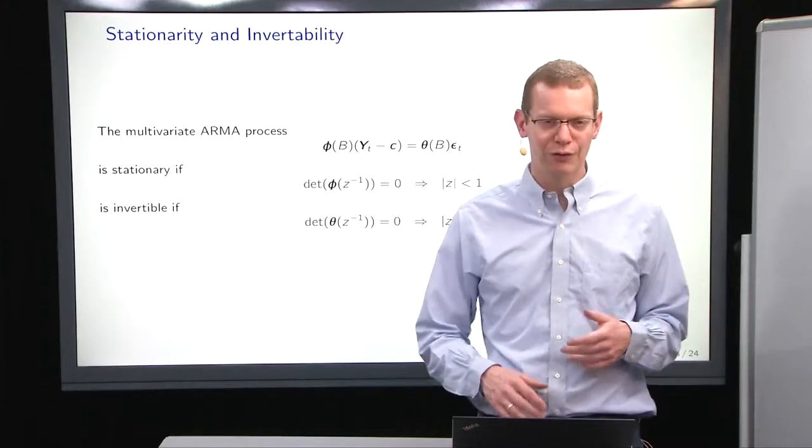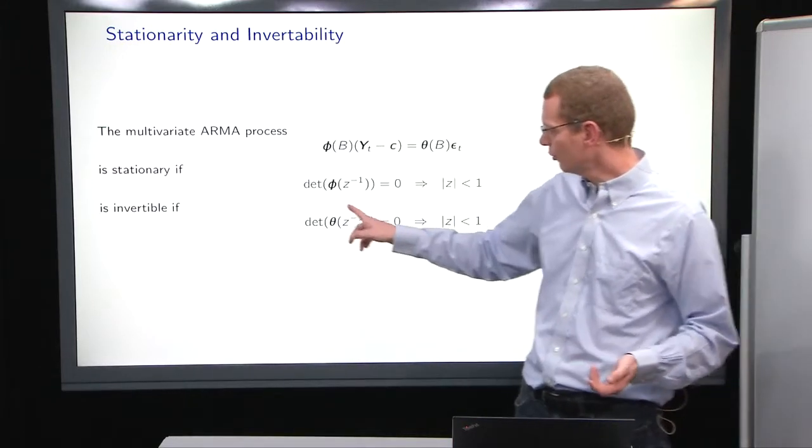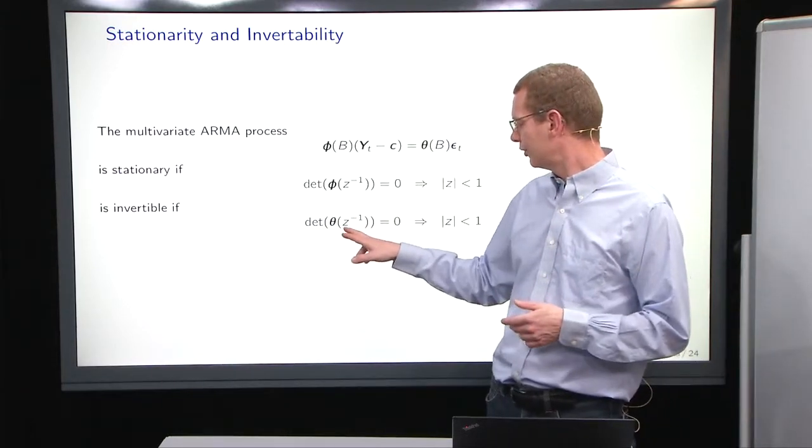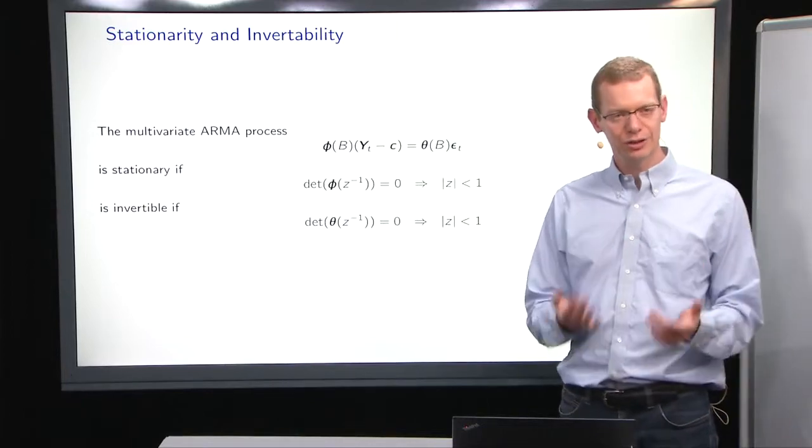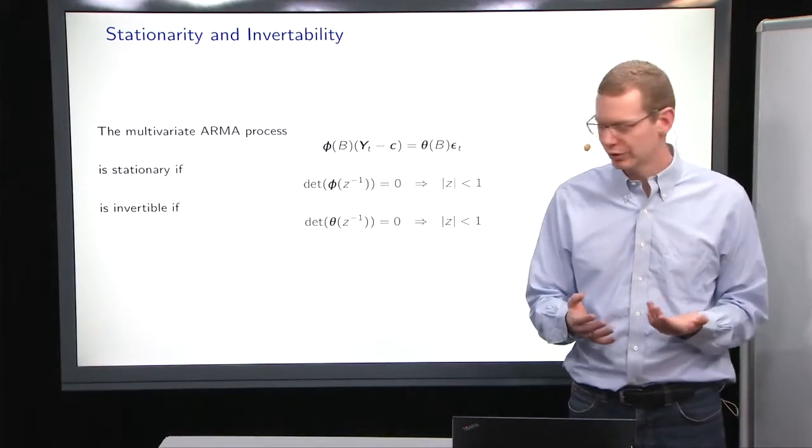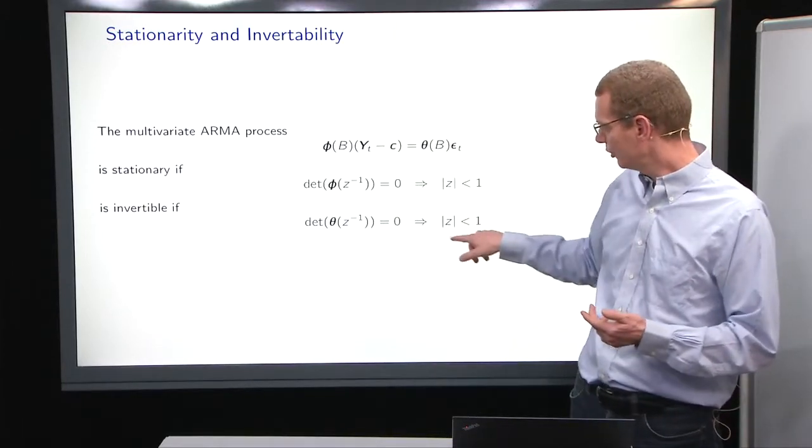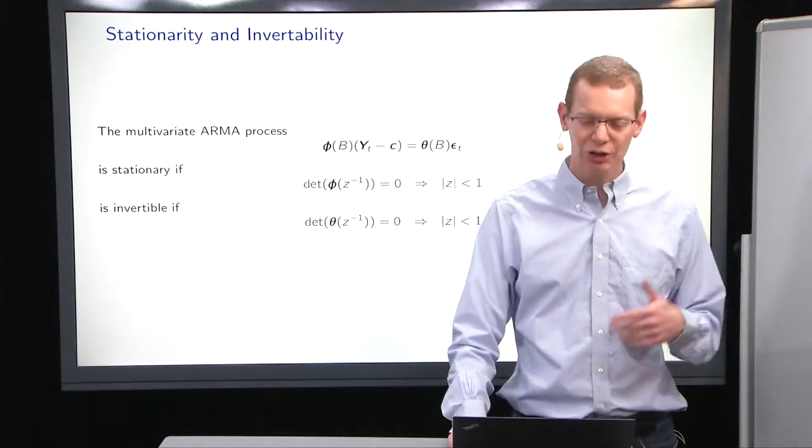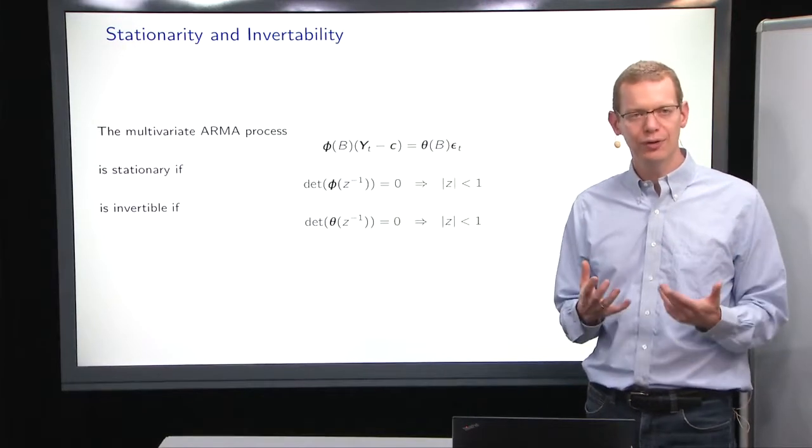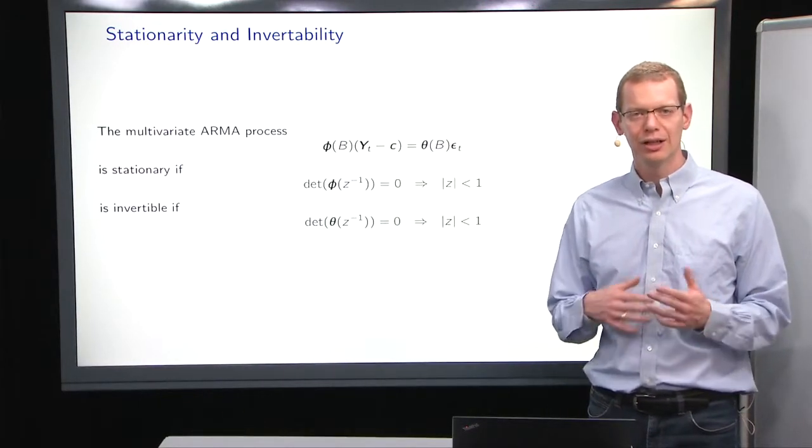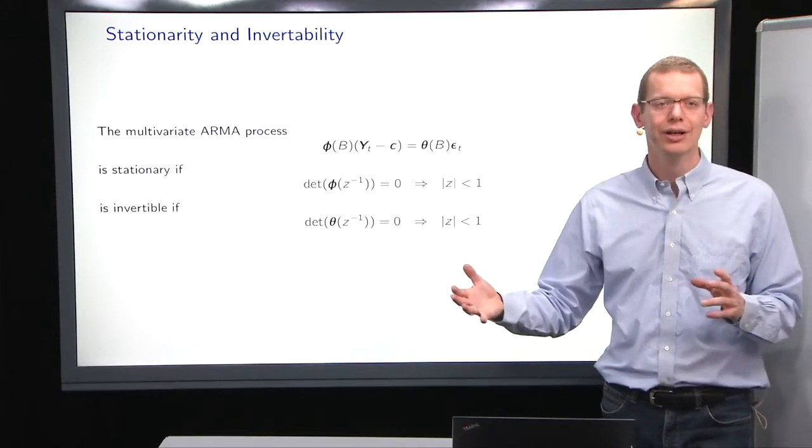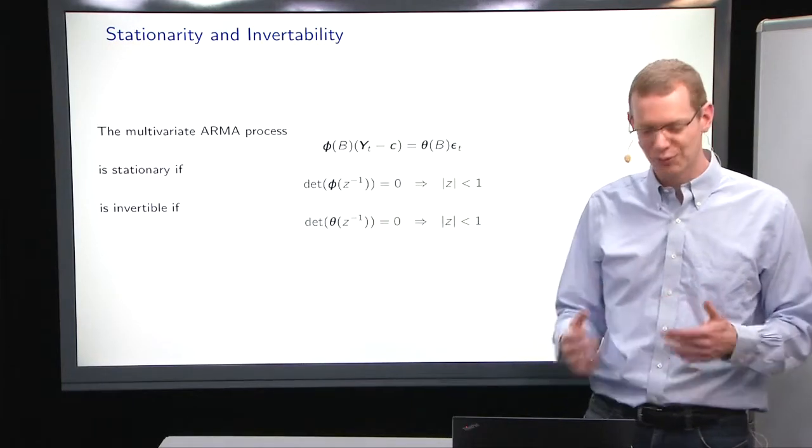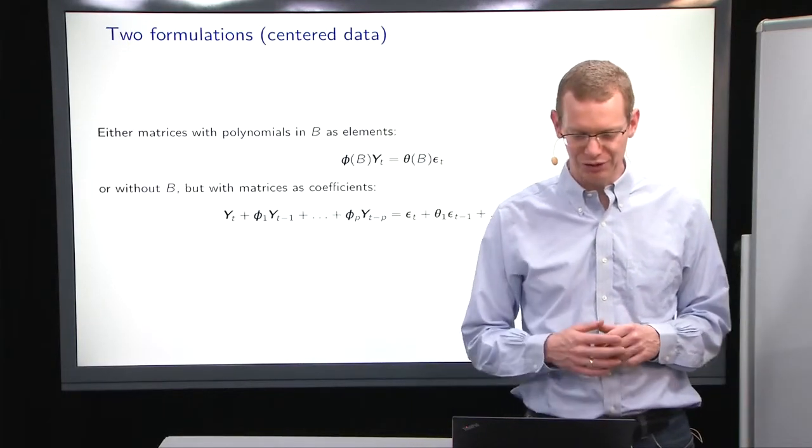Likewise, for invertibility, you look at the determinant of the theta, as in the MA part, of z inverse equal to zero, and solve that to get the zeros of the system. And if all zeros are inside the unit circle, we're happy. It's invertible. So there are many cases where the multivariate representation is analog or almost analog to univariate, and that's one of the nice things and reasons why it's nice to formulate things in a multivariate setting.